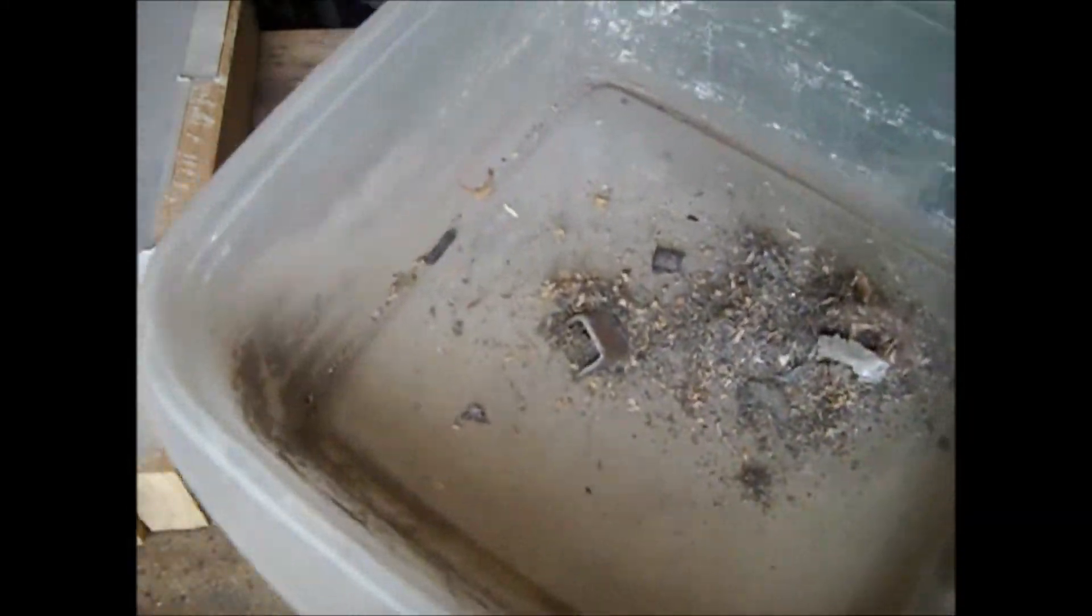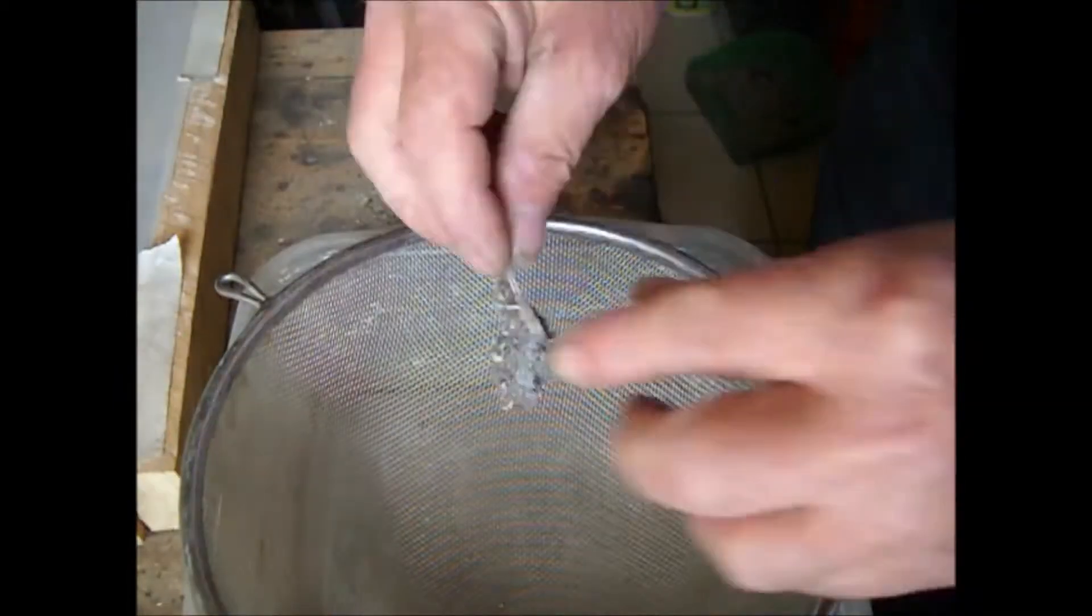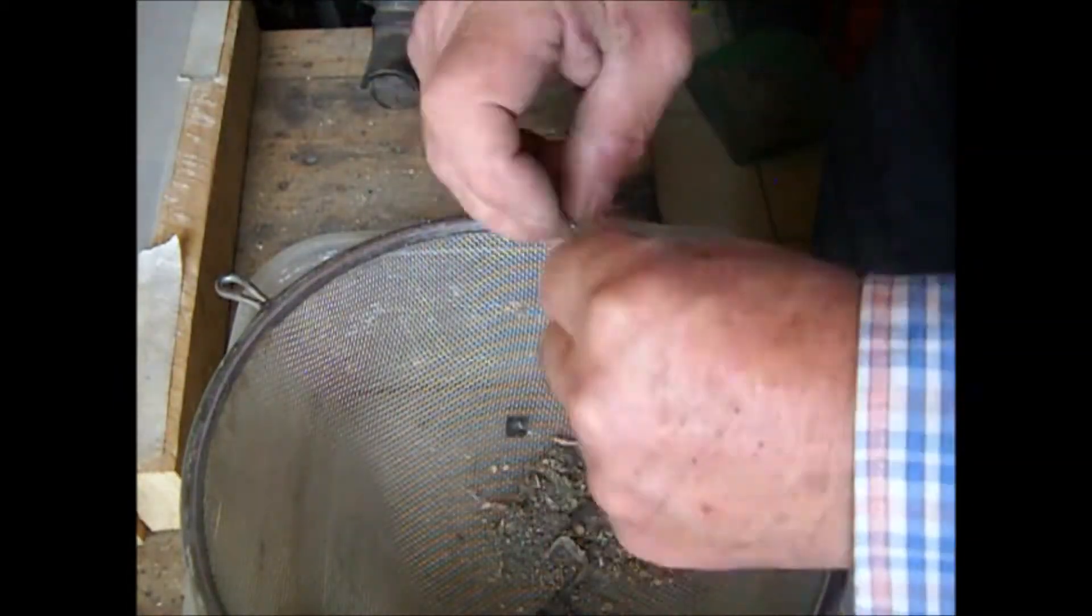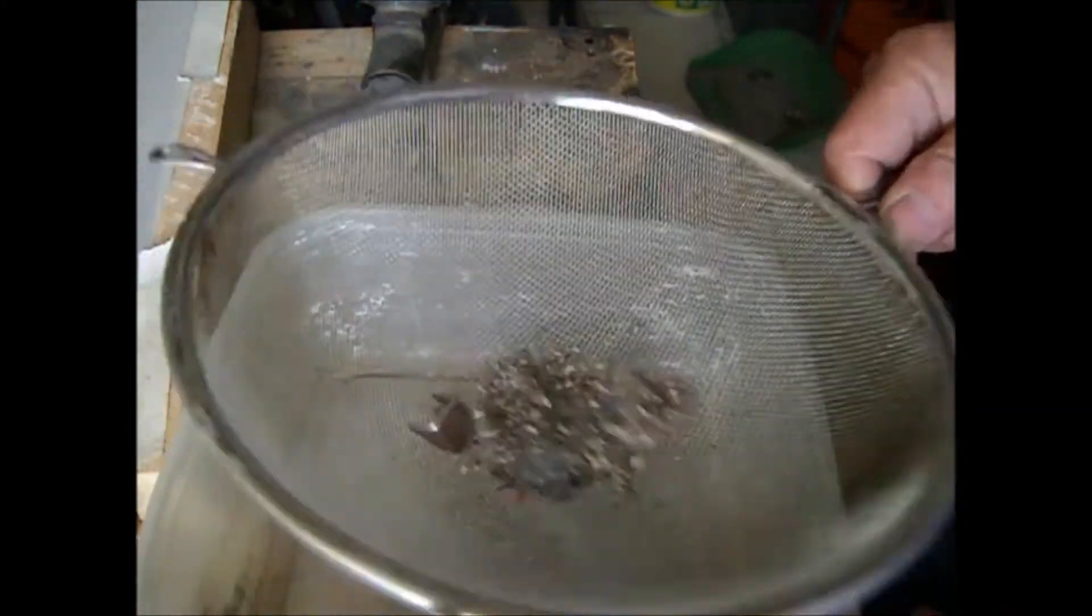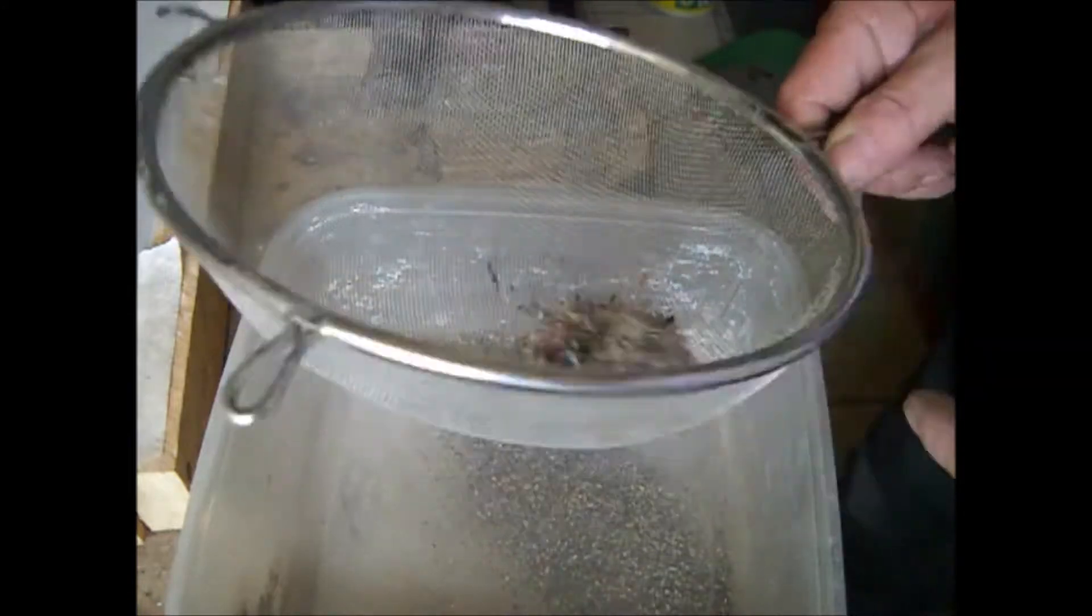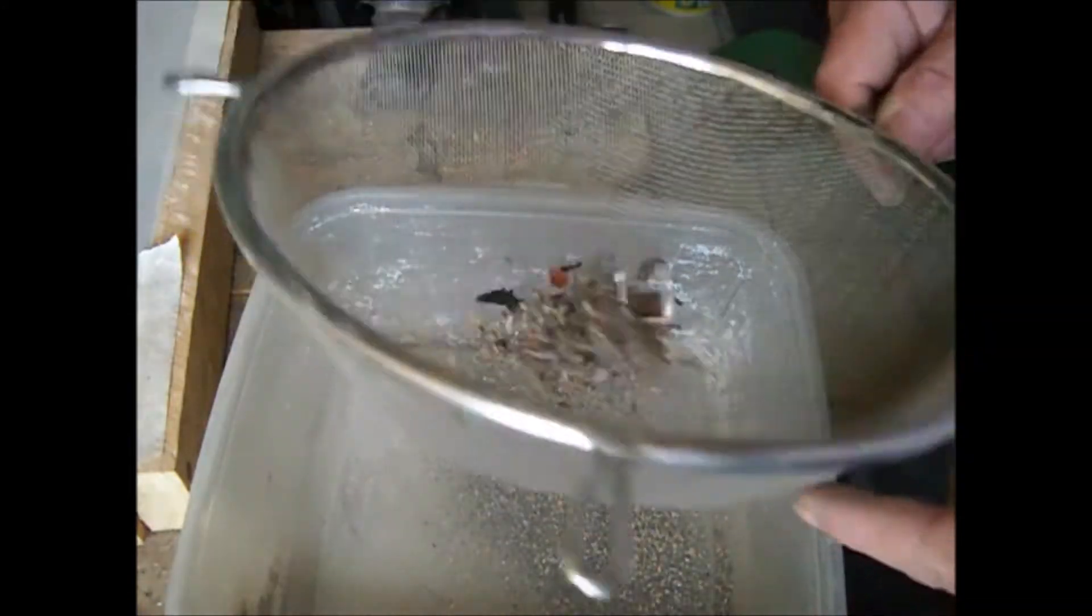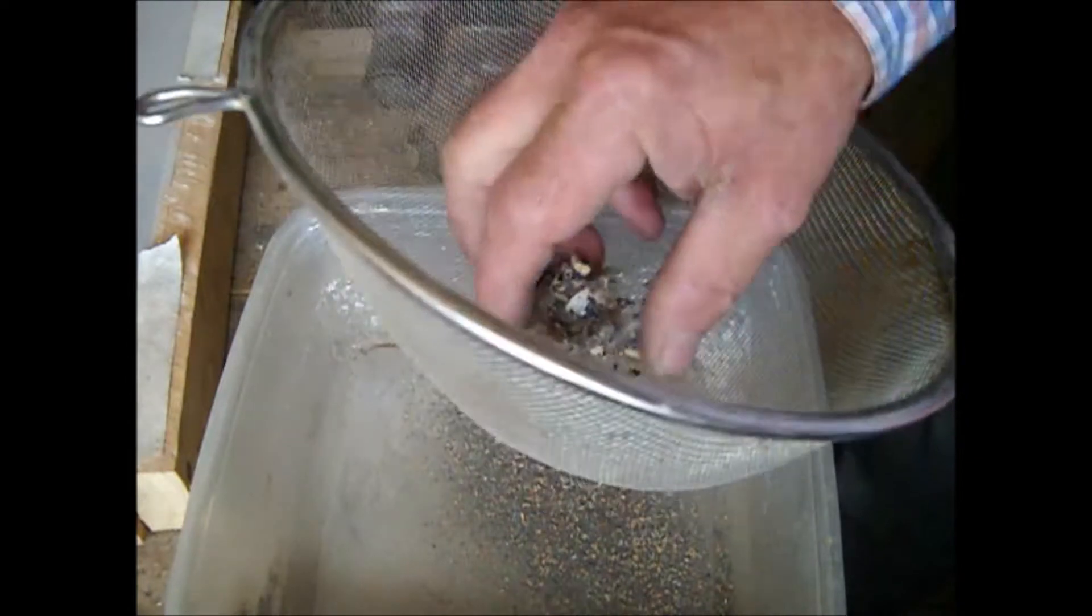After doing that, I make it go through a sieve. Now, get it through the sieve. This is a 0.5mm sieve. That gets rid of all the big stuff.